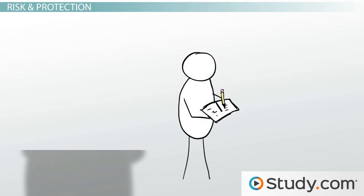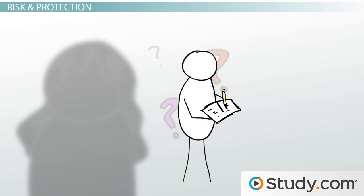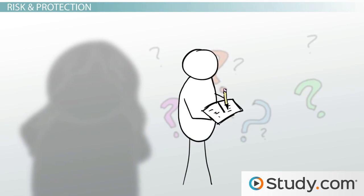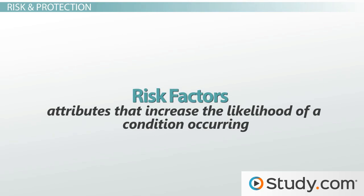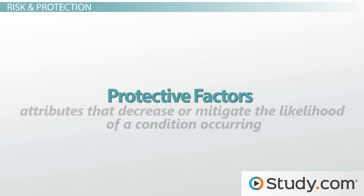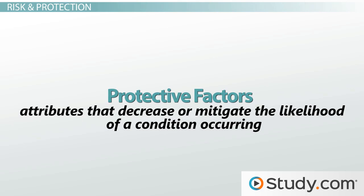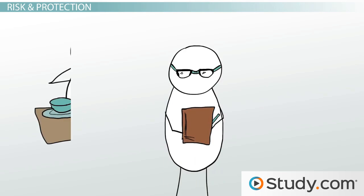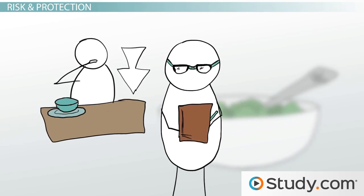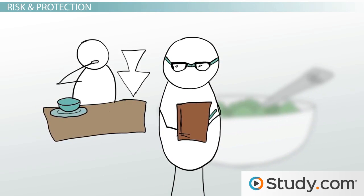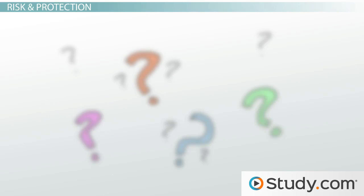Why do women suffer from eating disorders more than men? The answers lie in risk and protective factors. Risk factors are attributes that increase the likelihood of a condition occurring, while protective factors are attributes that decrease or mitigate the likelihood of a condition occurring. Protective factors don't necessarily reduce the eating disorder, but they can alter the chances of what happens if it does occur.